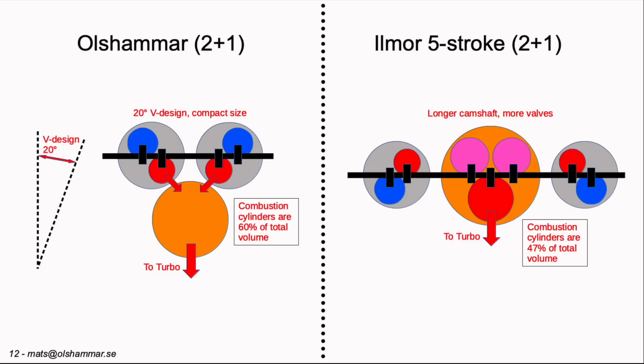If we compare it to the Ilmor 5-stroke we need a camshaft over all of them. And we need valves on all of them. And we also need a larger cylinder in the middle. So it will be a longer engine and a longer camshaft and more valves.